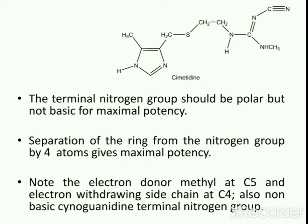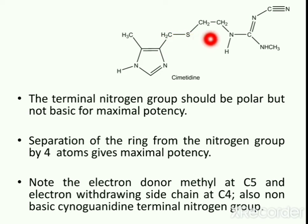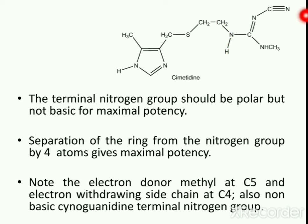An electron-donor methyl group at C5, an electron-withdrawing side chain at C4, and a basic cyanoguanidine terminal nitrogen group together give cimetidine its maximal potency.